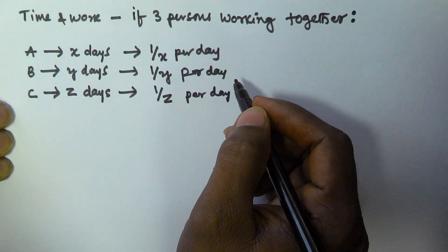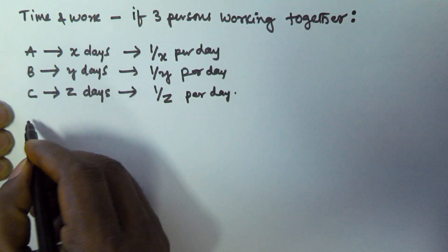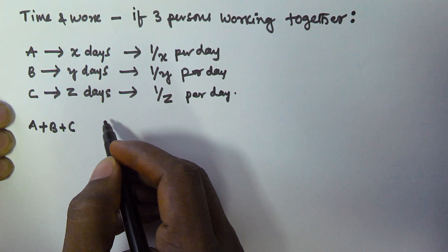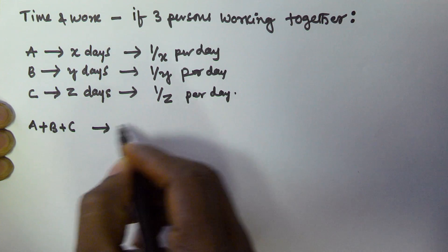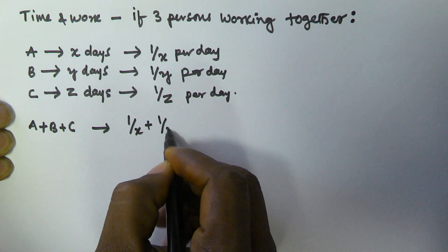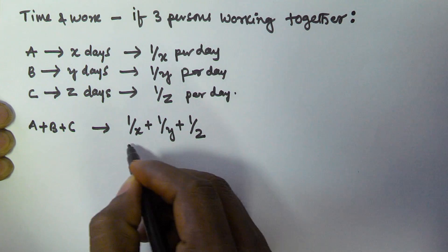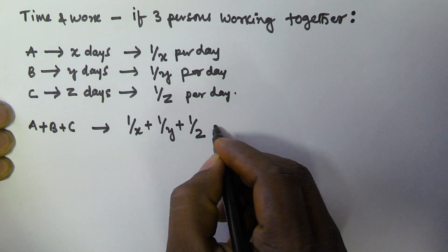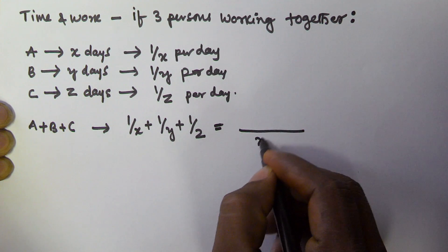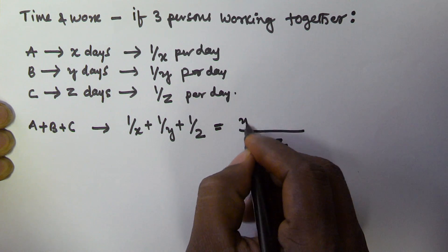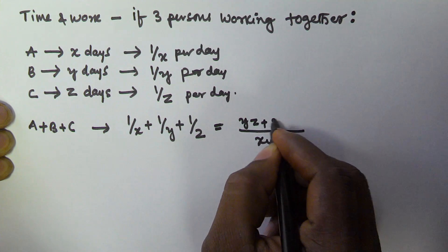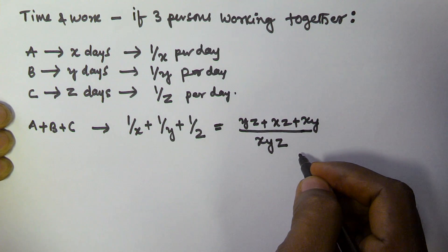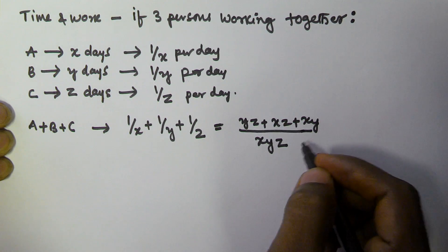The work finished by A, B, and C together in one day is given by 1/X + 1/Y + 1/Z. If you solve this equation, it becomes (YZ + XZ + XY) / XYZ. This is the work they are going to finish per day if they are working together.